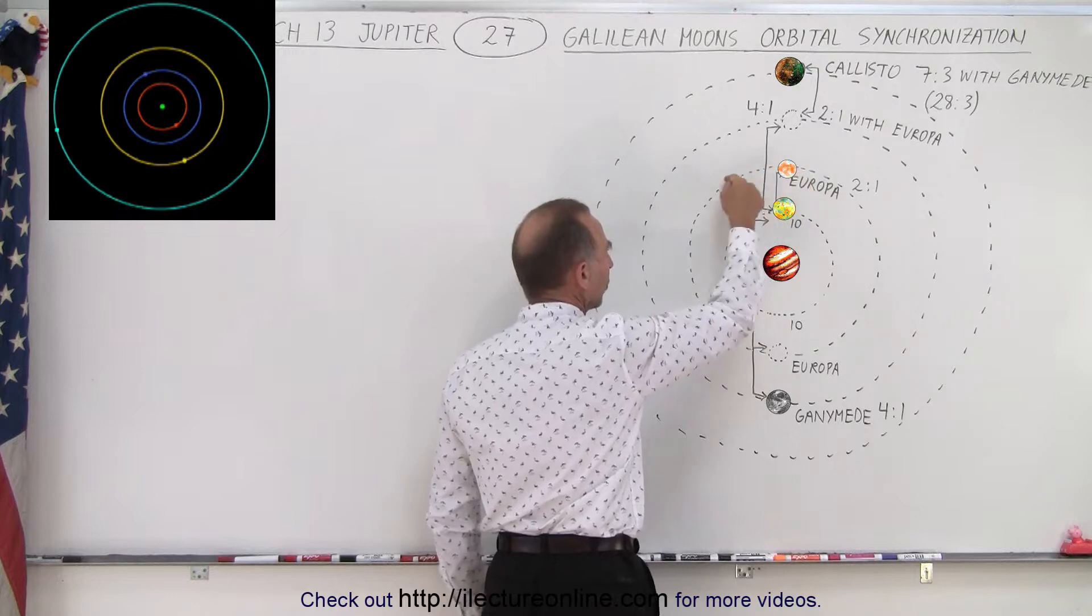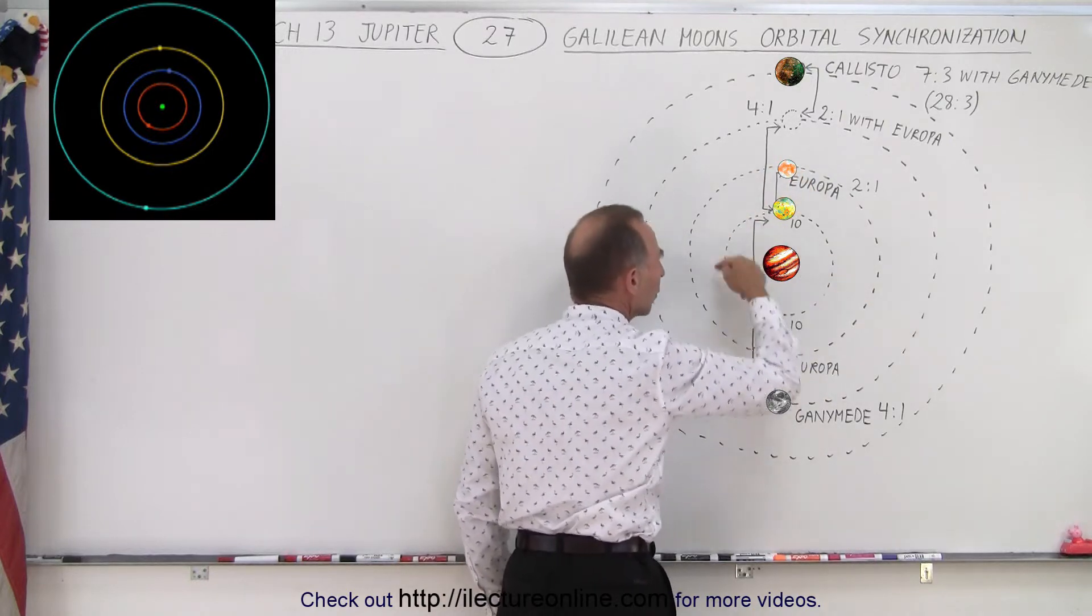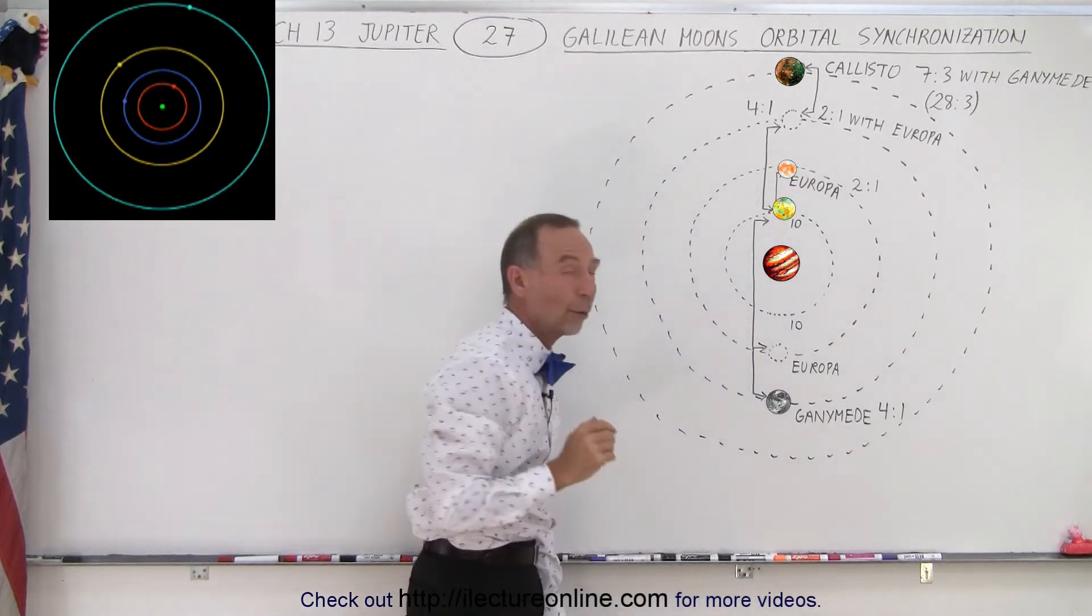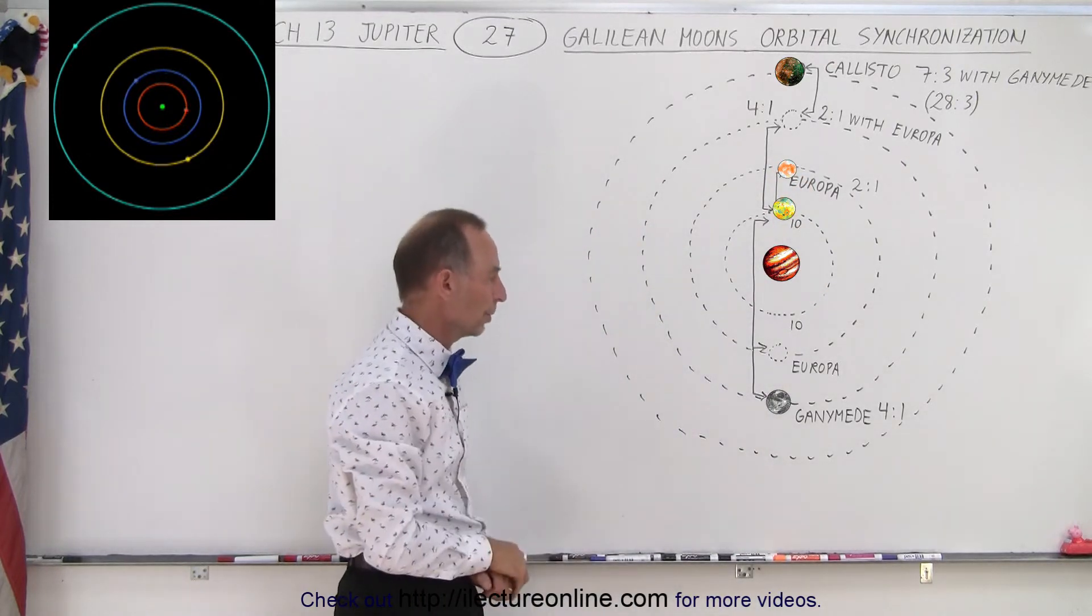So when Europa does one orbit around Jupiter, Io does two, but they always meet on the same side every two Io orbits or every one Europa orbit.